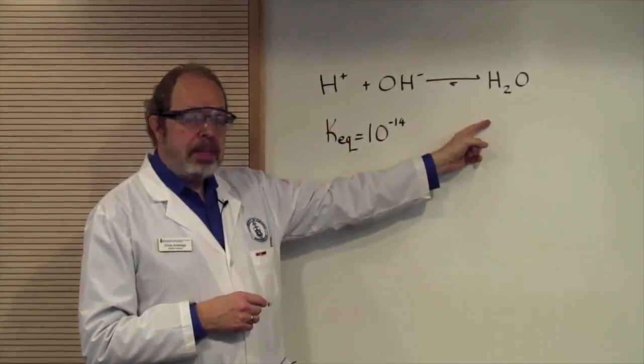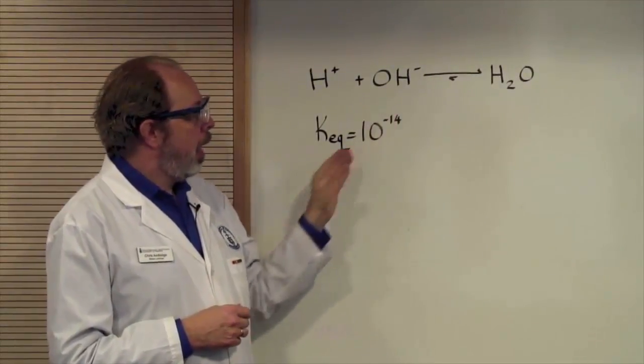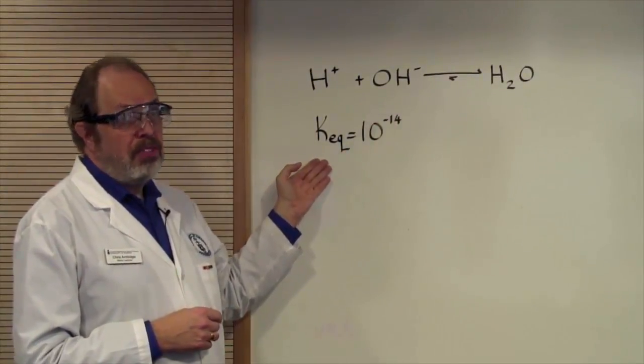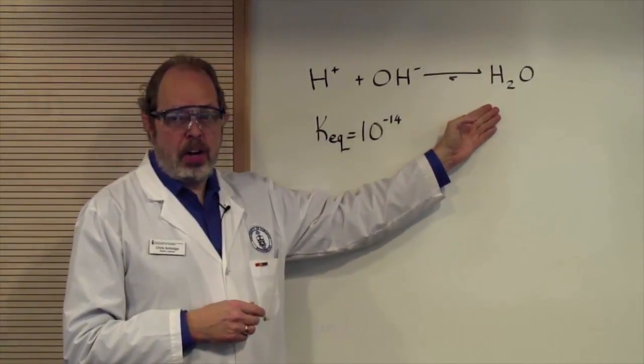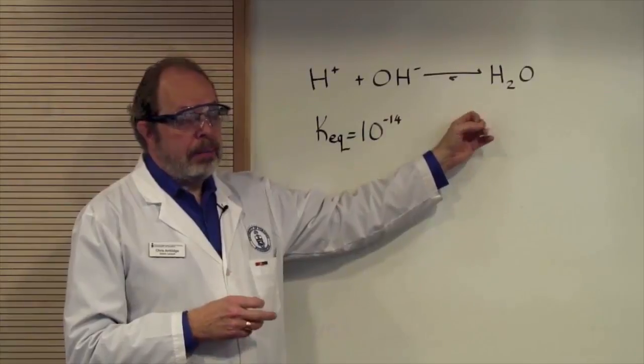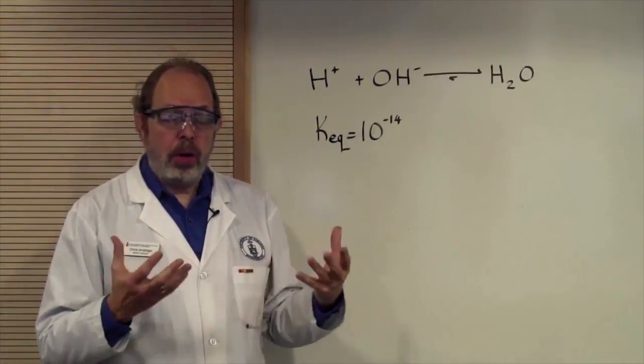It's a well-known chemical species. The products and the reactants are all stable. The equilibrium constant is 10 to the minus 14, so it's hugely over on this side of the equation.